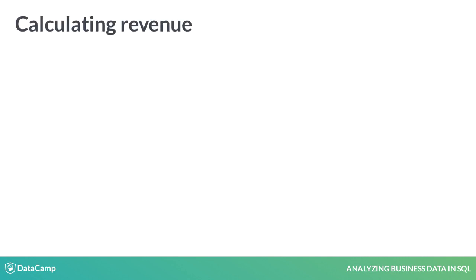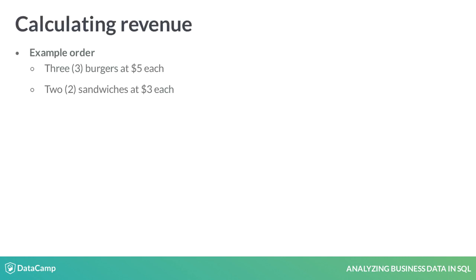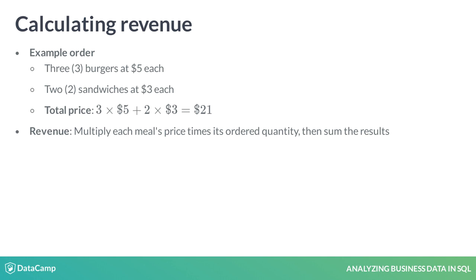Let's take an example. A user orders three burgers and two sandwiches, with each burger's price being $5 and each sandwich's price being $3. The user pays 3 times $5 plus 2 times $3 equals $21, which is Deliver's revenue from this order. This is how you calculate an order's revenue: multiply each meal's price by its ordered quantity, then sum the results.